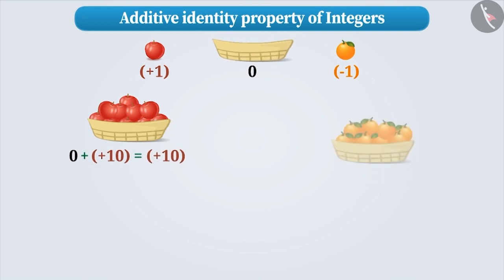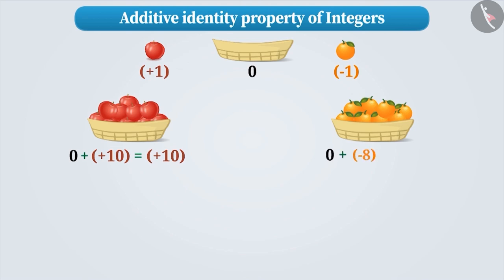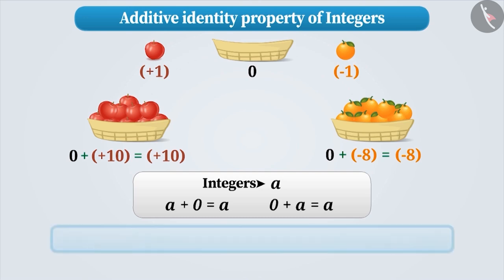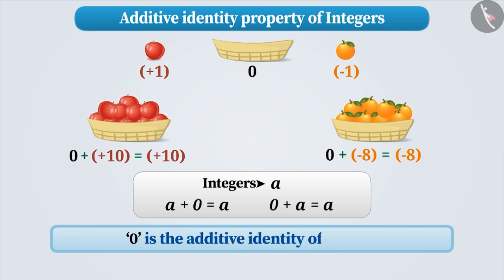Similarly, if we place 8 oranges in an empty basket, then the value of the basket becomes 0 plus minus 8 is equal to minus 8. Therefore, adding any integer to 0 gives the same integer. Since the value of the integer doesn't change even if we add 0 to it, we can say that 0 is the additive identity of integers.